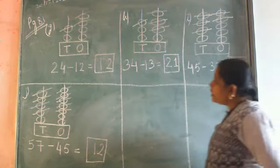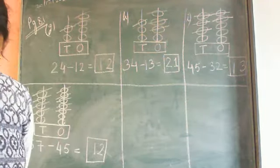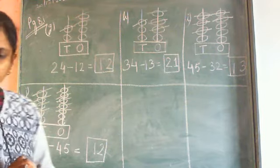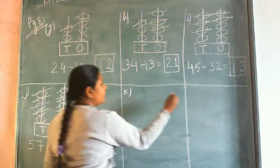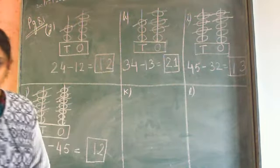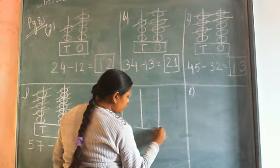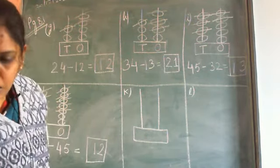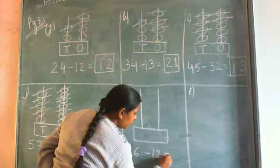Two questions are remaining. I am writing these two questions on the board — try to solve them yourself. I will give you a few minutes to solve these two questions, then I will solve them on the board and you can check your answers. Questions K and L: 26 minus 12 equals to, and 35 minus 33 equals to.